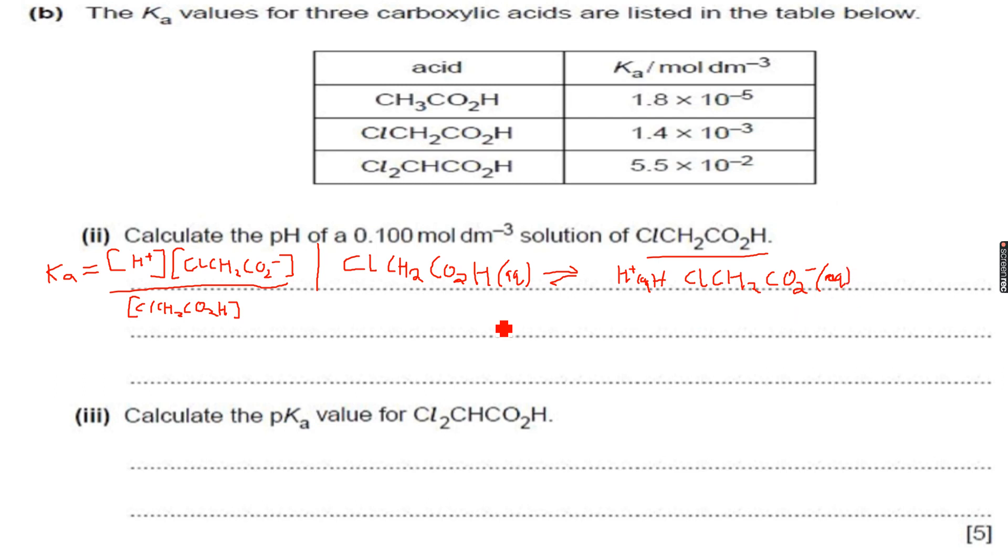So now if x moles of the acid dissociates then we have x moles of this and we have x moles of this so the concentration of both H plus ions and this anion which is 2-chloroethanoate ion